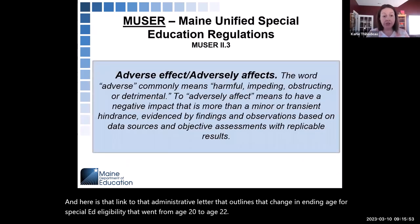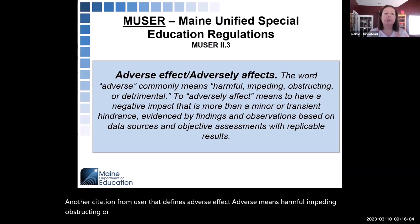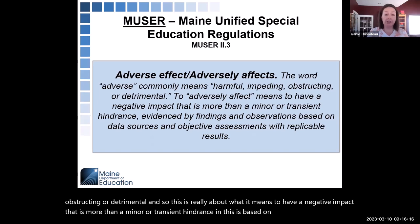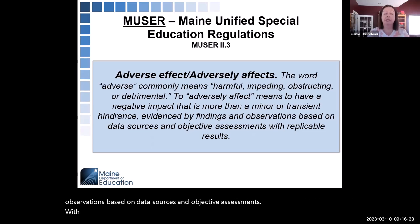Another citation from MUSER defines adverse effect. Adverse means harmful, impeding, obstructing, or detrimental. This is about what it means to have a negative impact that is more than a minor or transient hindrance, based on evidence from findings and observations, data sources, and objective assessments with replicable results.